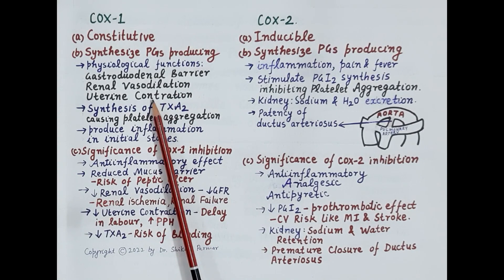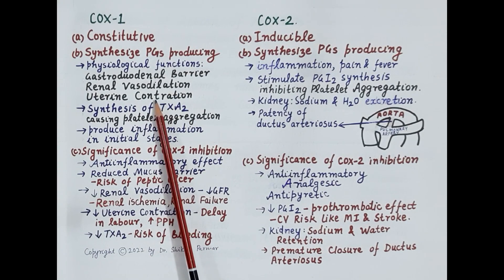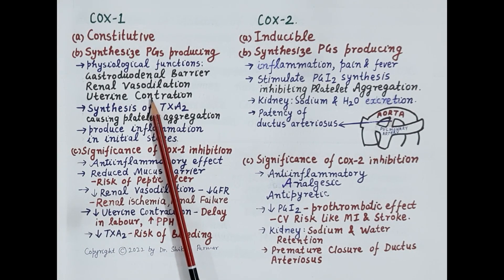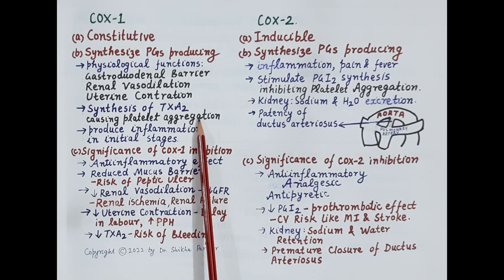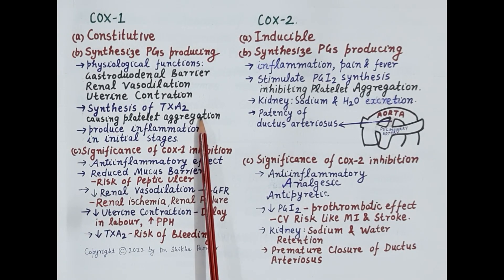Another important function of COX-1 is to produce uterine contraction via prostaglandin F2 alpha. This uterine contraction is essential for the progression of labor and prevention of postpartum hemorrhage. COX-1 also stimulates synthesis of thromboxane A2 by platelets; thromboxane A2 causes platelet aggregation, resulting in formation of platelet plugs that seal injured blood vessels.